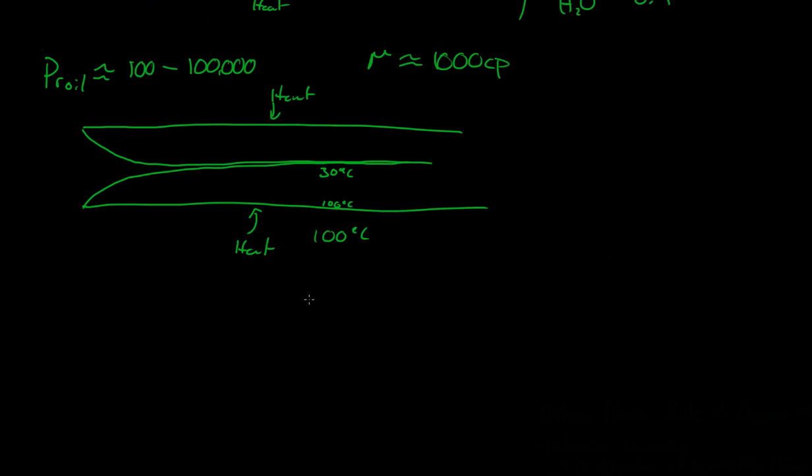And we can go to the other side, where if we did the Prandtl number of Mercury, it's approximately 0.015. And remember the Prandtl number is a dimensionless unit. It's dimensionless, it has no units.